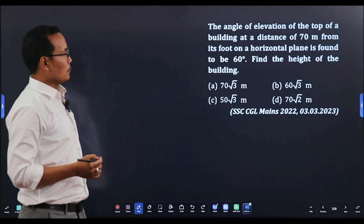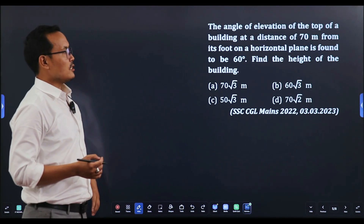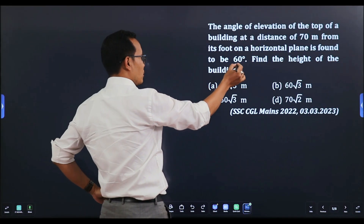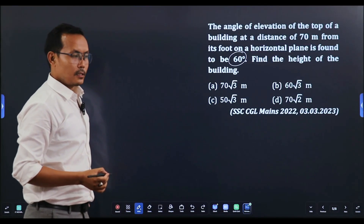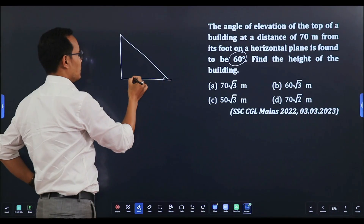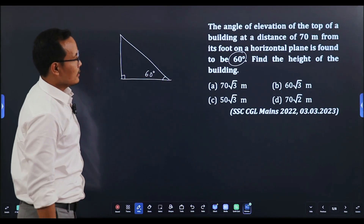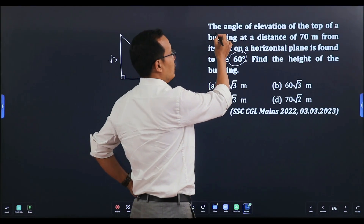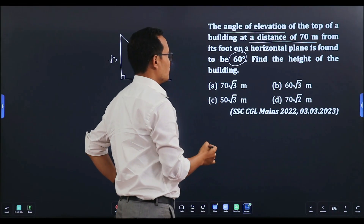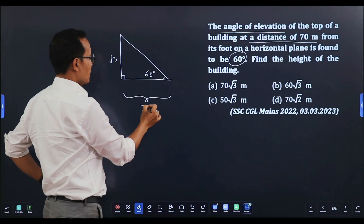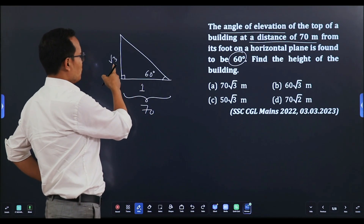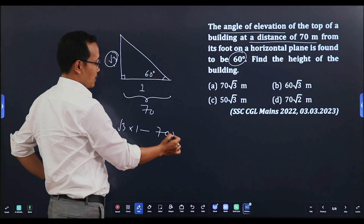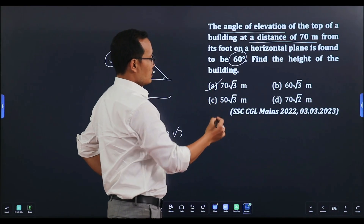Next question: The angle of elevation of the top of a building at a distance of 70 metres from its foot on a horizontal plane is found to be 60 degrees. At 60 degrees the opposite side is root 3, and the base is 1. The base here is 70 metres, so the height of the building is 70 root 3. Option A — 70 root 3.